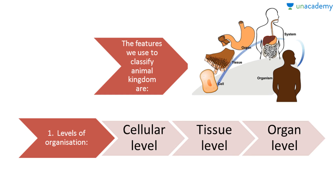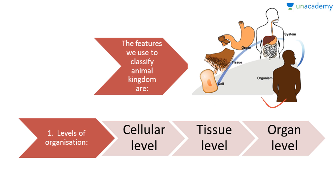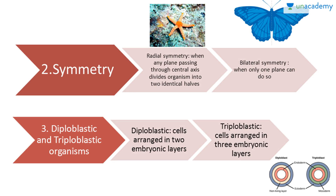The features we use to classify Animal Kingdom are: one, levels of organization — cell level, tissue level, organ level, and organ system level. Second is symmetry — there are two types of symmetry in animals.